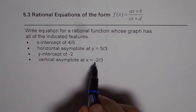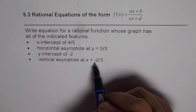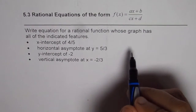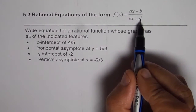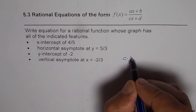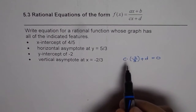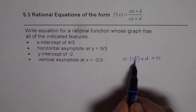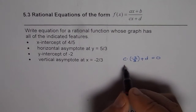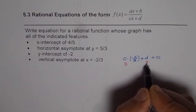Let's say the vertical asymptote is x = −2/3. It means that cx + d should equal 0 when x = −2/3. So that means c times (−2/3) plus d equals 0. Clearly if c = 3, then 3 and 3 will cancel, and d = 2 should work. So from here I can say my c value is 3 and d is 2.